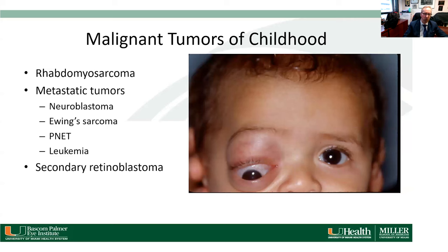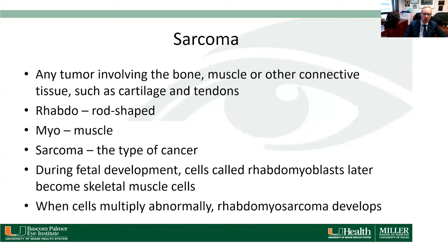The malignant orbital tumors of childhood I'm going to discuss are rhabdomyosarcoma, metastatic tumors, and secondary retinoblastoma. You can see this child with acute proptosis of the right eye with downward displacement, which was a rhabdomyosarcoma. A sarcoma is any tumor involving bone, muscle, or other connective tissue. Rhabdomyosarcoma — 'rhabdo' means rod-shaped, 'myo' is muscle — is a type of cancer arising from cells that during fetal development later become skeletal muscle cells.